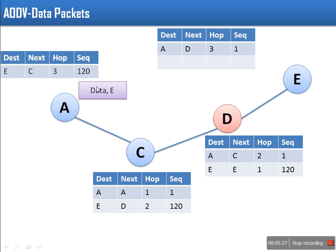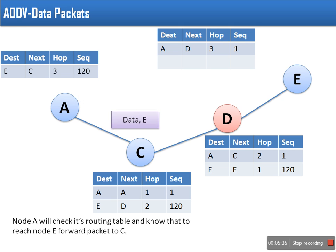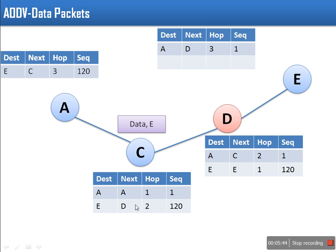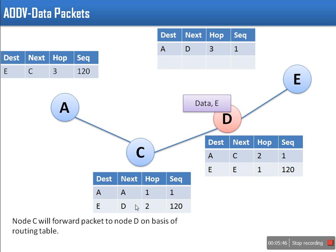After setting the routing entry in the table, node A sends its data packet to destination E. According to its routing table, A sends this packet to node C. Node C will check that for destination E, it should forward the packet to D. This is the point where node D will show its malicious behavior — D will drop this packet and not forward it.